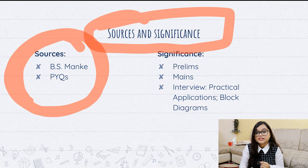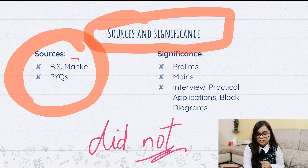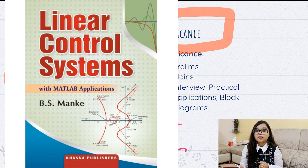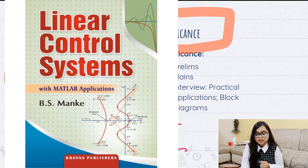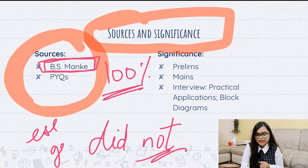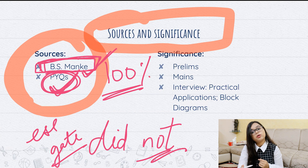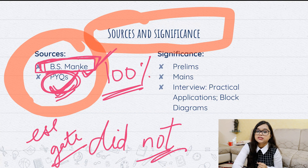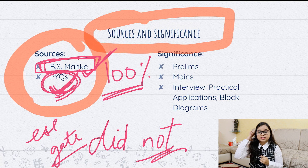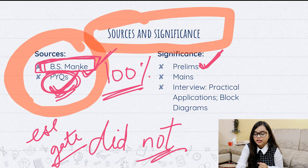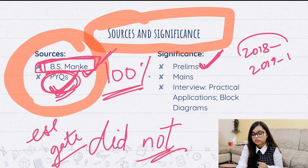Coming to sources: this is the only subject for which I did not prepare notes. The only source I relied on was one book, and whoever knows this book would completely agree that it is 100 percent sufficient for all the topics — not just for ESE but for GATE and any exam containing Control Systems. Previous year questions are also very important for ESE to understand what types of questions are asked. Significance is extremely high in prelims — in 2018 there were a lot of questions, and in 2019 when I had my exam I had 12 to 14 questions from this subject.